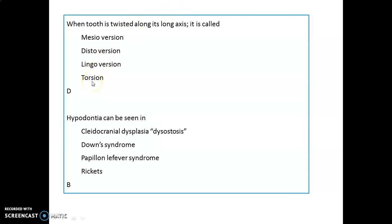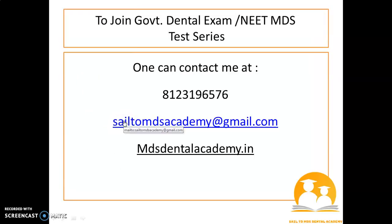When a tooth is twisted along its long axis, it is called torsion. Hypodontia is seen in Down syndrome. That was all from this session — please take care, prepare hard, and all the best for your examination.